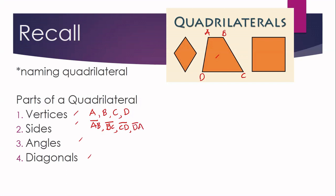If we talk of angles, here are the four angles: angle 1, 2, 3, and 4. The four angles are angle A, angle B, angle C, and angle D.